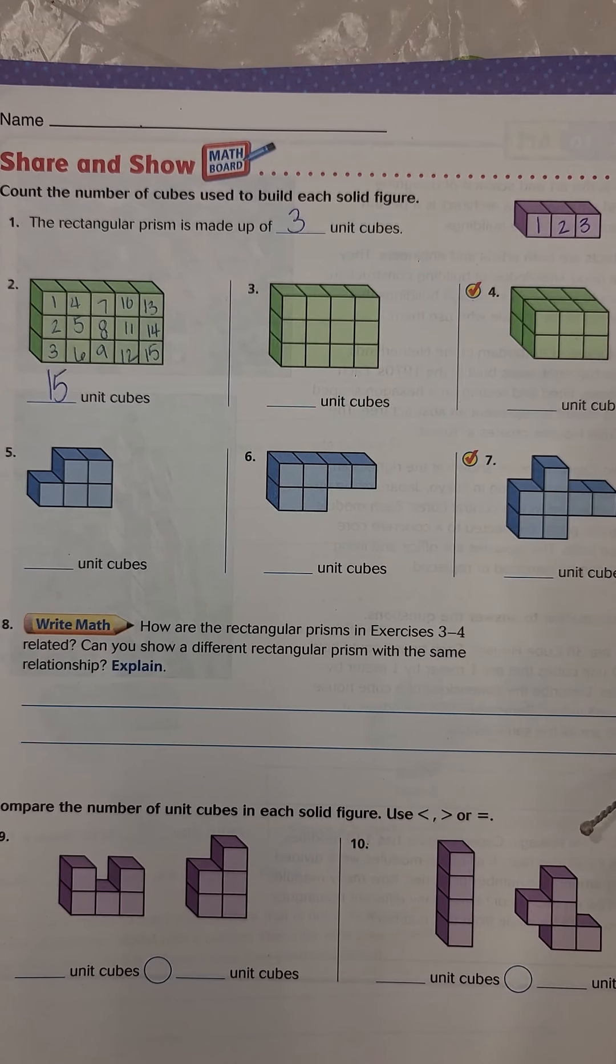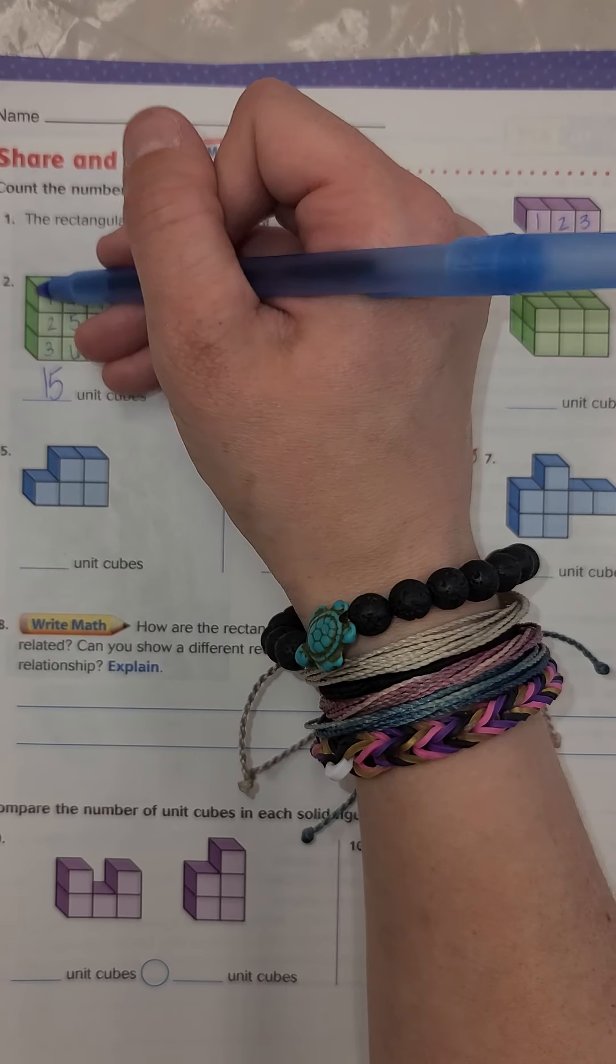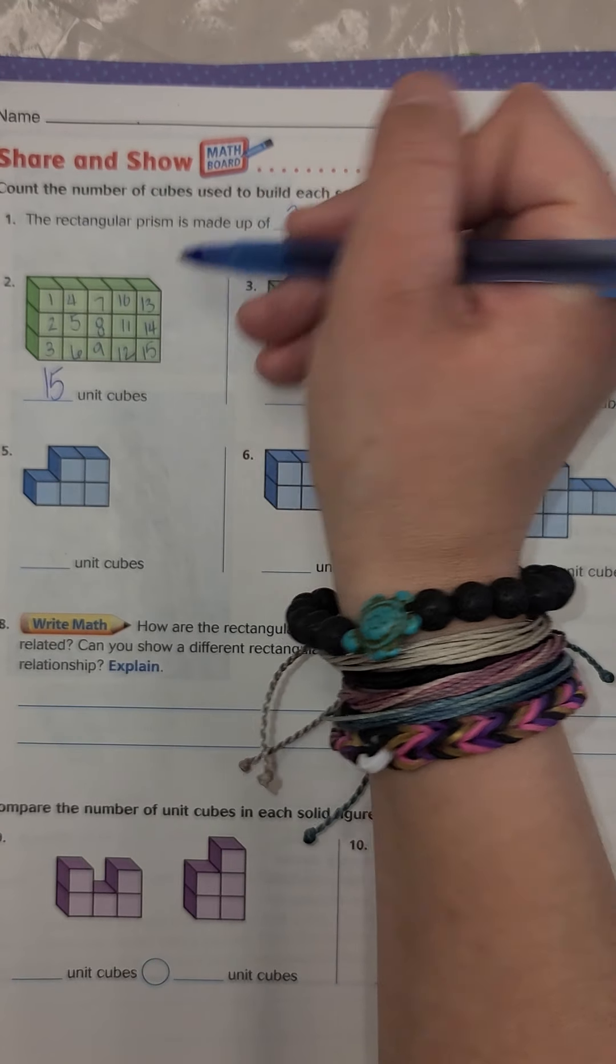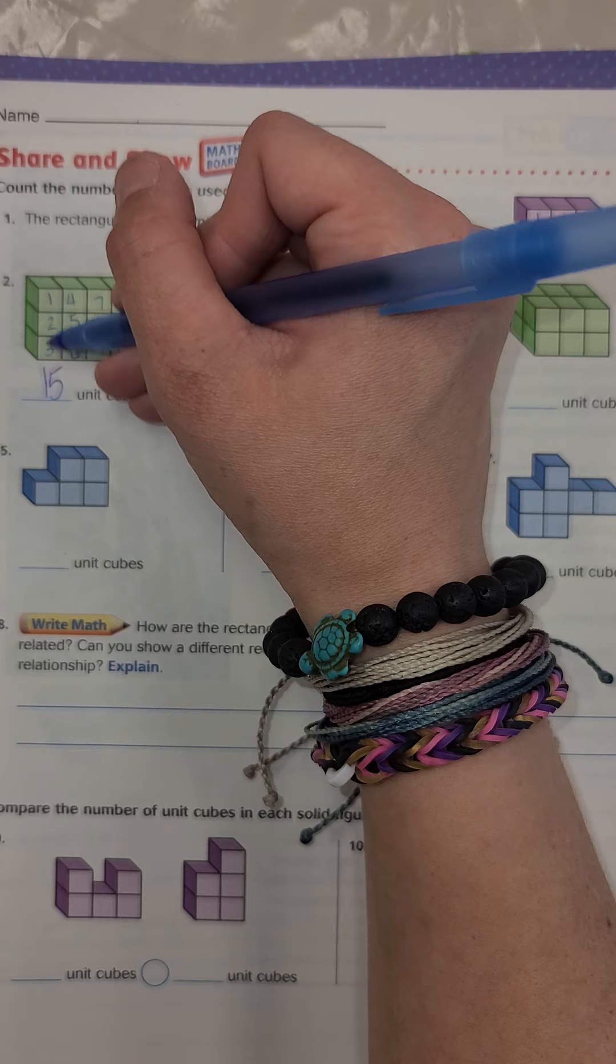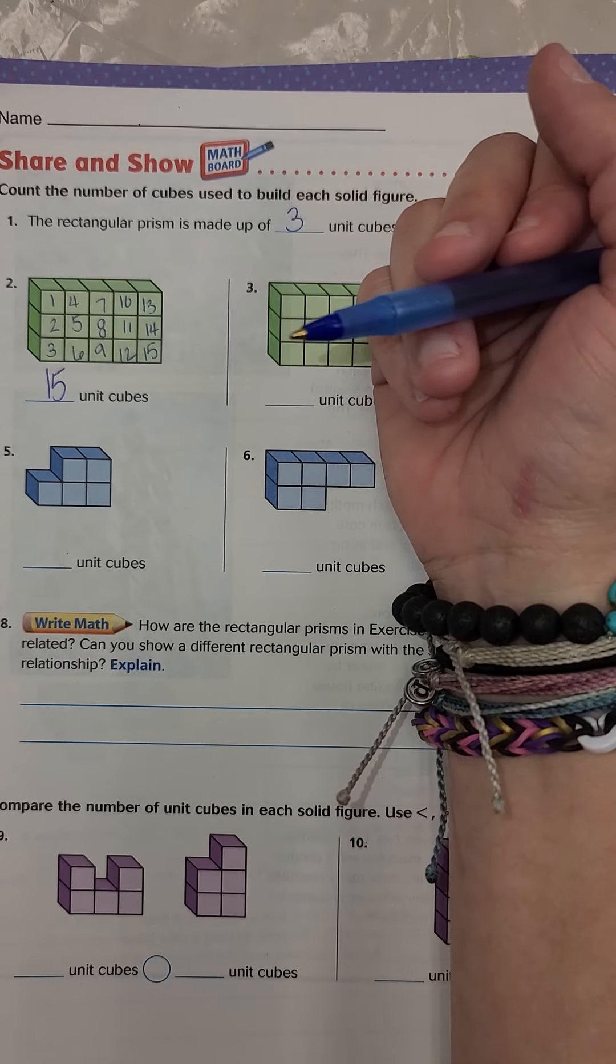Now, what could I have done instead of counting each and every one of them? I could have looked and saw that there were three rows. There's the same amount in each row. So I have three rows of one, two, three, four, five. So three times five, which would give me 15 unit cubes.